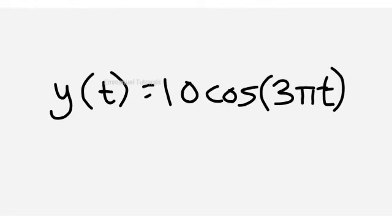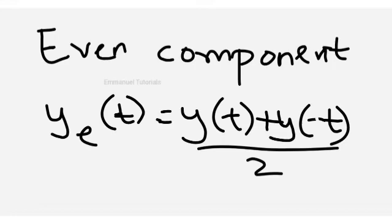So let's start. The signal given, for which we have to find the even and odd components, is y(t) = 10cos(3πt). For these kinds of signals, you don't need to draw or sketch the signal because it becomes very complex when you try to draw the even and odd components. So it's better to solve it using the algebraic method.